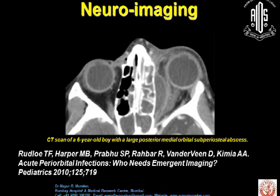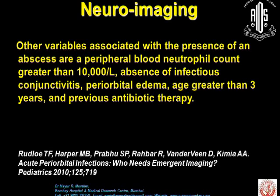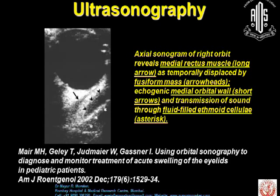Neuroimaging is important. This is a CT of a six-year-old boy showing a large posterior medial orbital subperiosteal abscess. What is important here is that although proptosis, pain, restricted extraocular movements, and ophthalmic findings are associated with the presence of an abscess, 50.5% of children with abscesses do not experience these symptoms. Other variables associated with the presence of an abscess include a peripheral blood neutrophil count greater than 10,000 per microlitre, absence of infectious conjunctivitis, periorbital oedema, age greater than 3 years, and previous antibiotic therapy. This is an ultrasound sonogram of the right orbit showing the medial rectus muscle displaced by a fusiform mass along the medial orbital wall, with transmission of sound through the fluid-filled ethmoid cells.